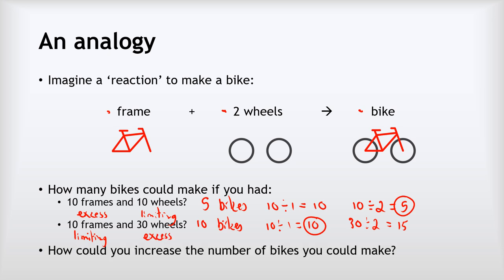What could we do to increase the number of bikes we could make? In the first example, adding more frames won't make any difference because we've already got more than enough frames — the only way to get more bikes is to add more wheels. Equally, in the second example, we've already got more wheels than we can use, so the only way to increase the number of bikes is to add more frames. This analogy works really well, and the same mathematics applies to balanced chemical equations with different coefficients and different numbers of moles.